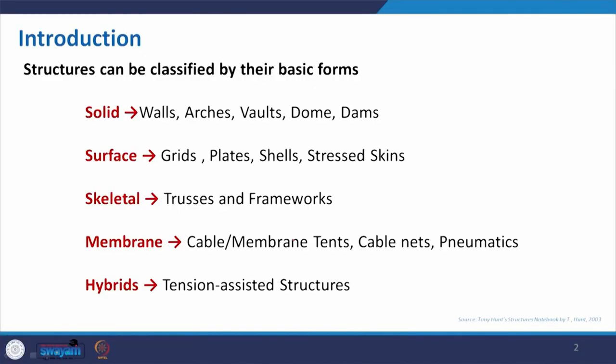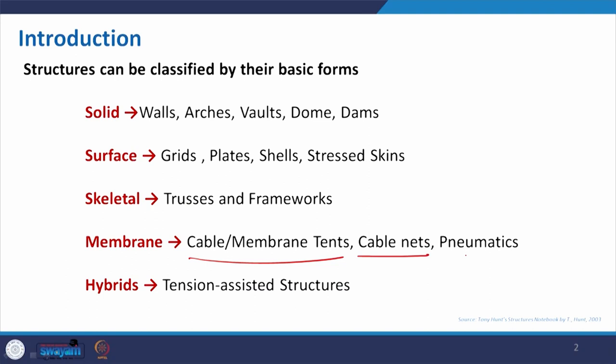In this lecture we try to divide structures into five categories. The first is the solid type; the second is surface — having lower thickness. Skeletal is like a backbone where the remaining part of the building just provides environmental protection or privacy, like frame structures. There is also membrane structure — tents, cables, pneumatic structures. And skeleton includes frameworks and trusses of different kinds. We will discuss each separately to understand how they deal with applied loads — compression, tension, bending, and shear.